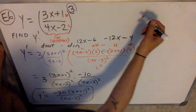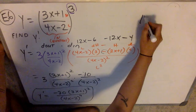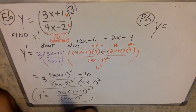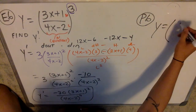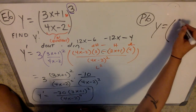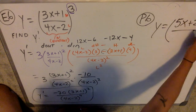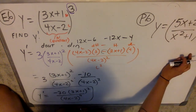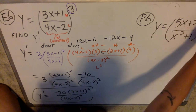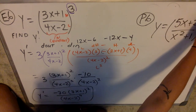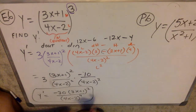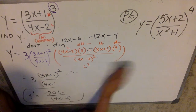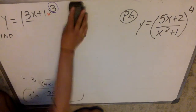I'll write the practice problem over here and then erase this and do it on this side. For P6: same basic question — y equals (5x+2)/(x²+1) all to the 4th power. Try and find y prime. Pause me if you want to do it on your own.